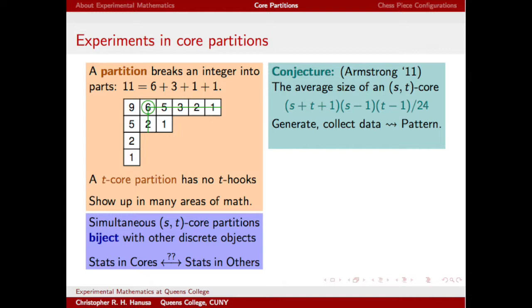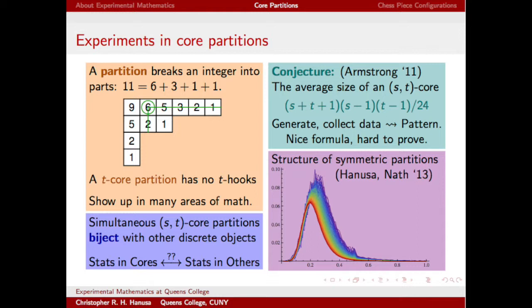This is a beautiful formula that has been verified by computer experiment for many, many cases, but it has so far resisted a proof by hand. Here's another nice chart, which I generated collecting data using a computer, that tries to say something about the structure of symmetric or self-conjugate core partitions. It would have been difficult to conjecture anything without the visualization and calculation capabilities of a computer.